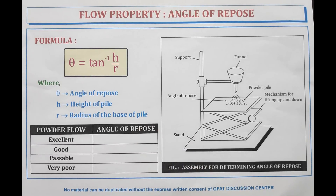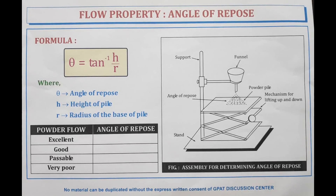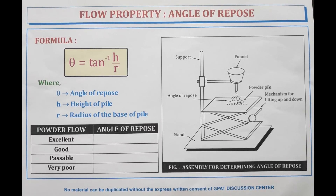During the manufacturing of tablets and capsule filling of powder in a container, it involves several powder handling steps including blending, transferring, storing, and feeding. The inability to achieve reliable powder flow during these steps can have a significant adverse effect on the manufacturing and release of the product. Due to these reasons, it is important to measure the flow property of powder.